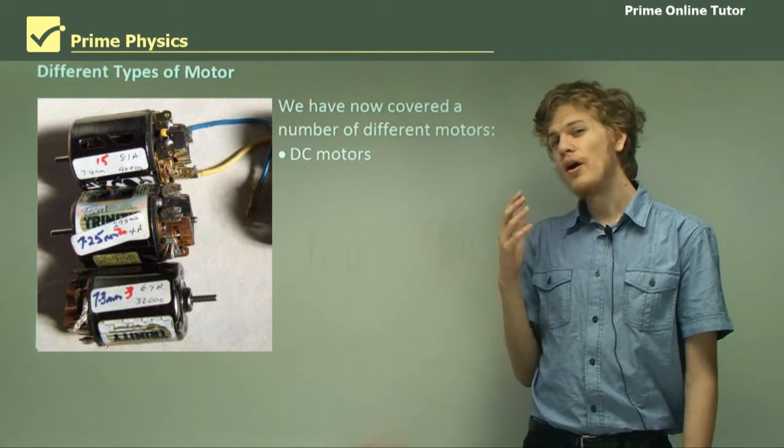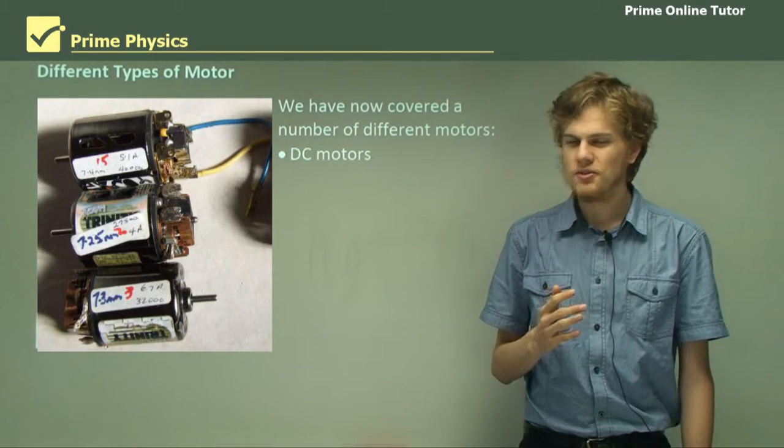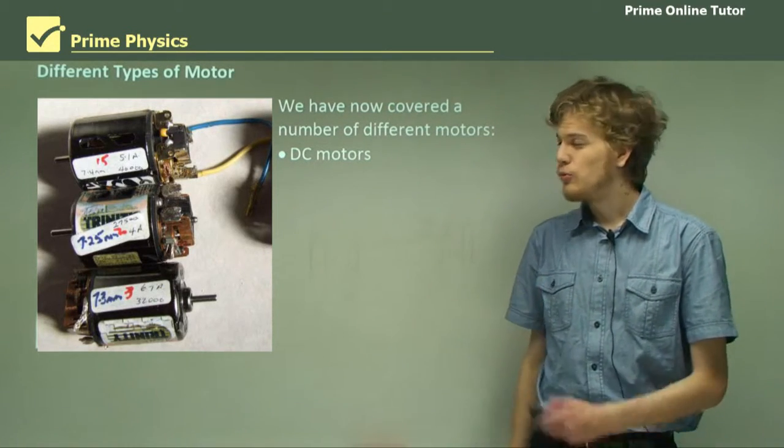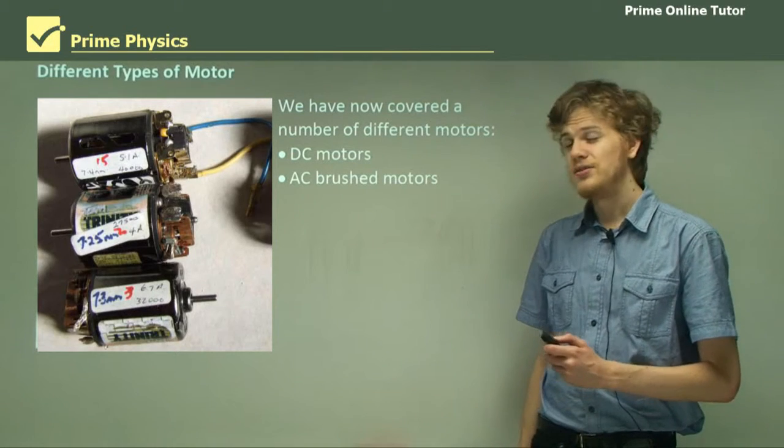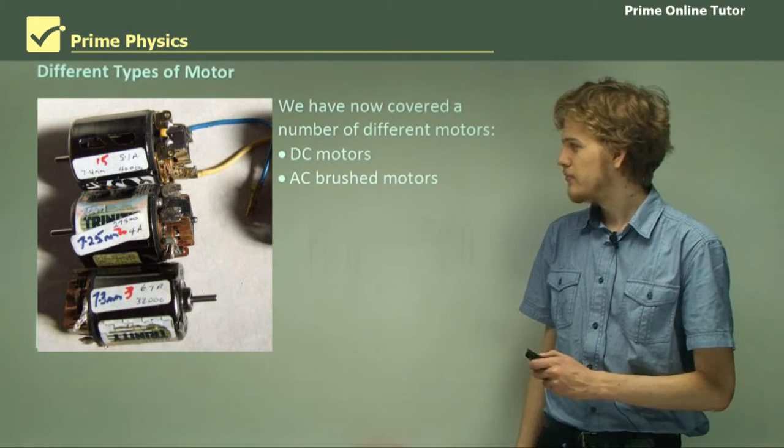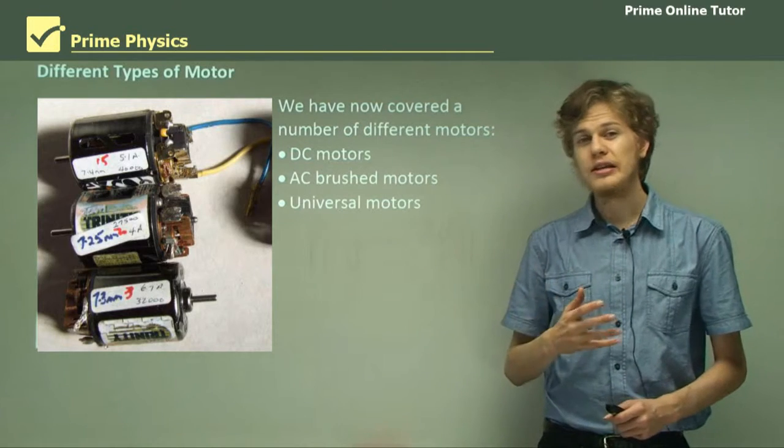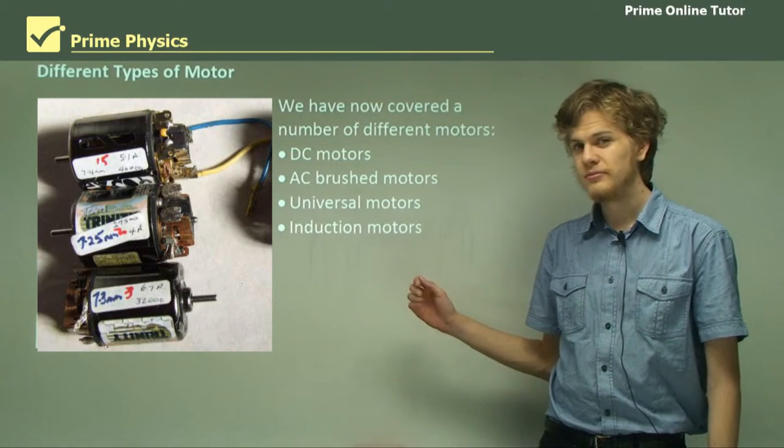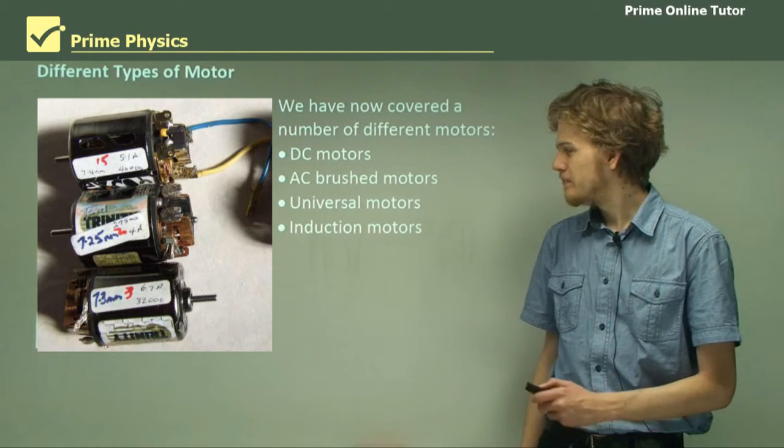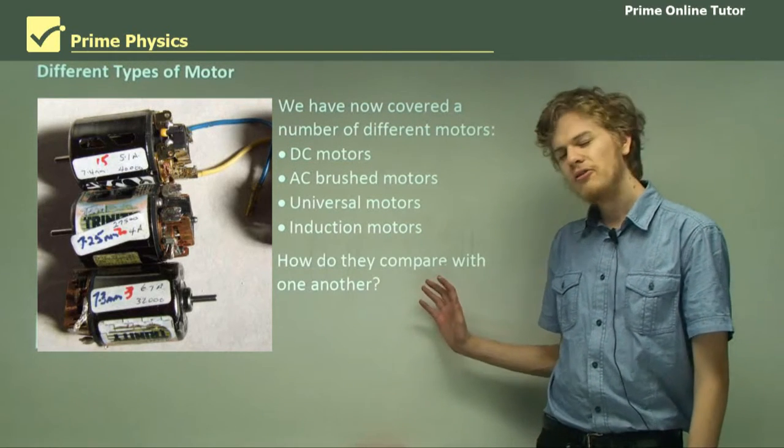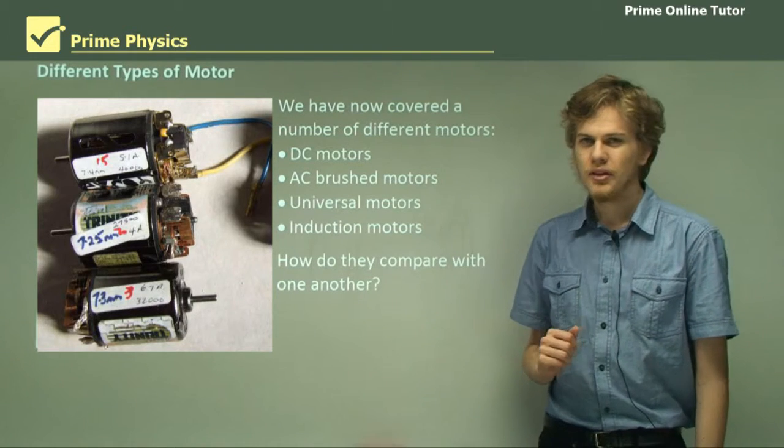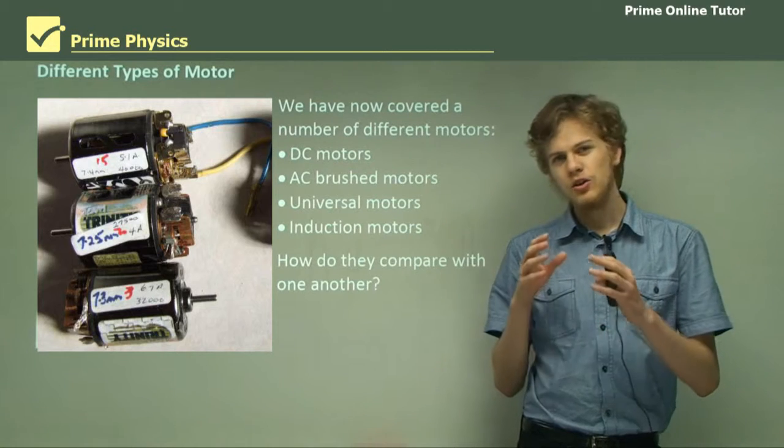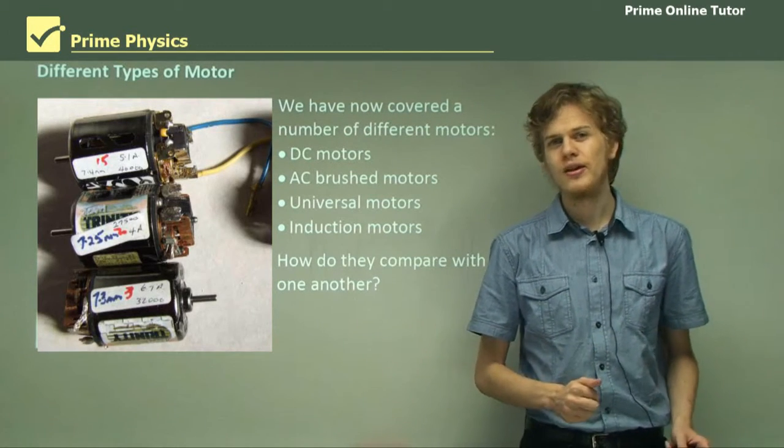So we've now covered quite a few different sorts of motors. Let's see if you can remember them all. We started off with DC motors and more recently we've covered AC brushed motors, universal motors which can run on AC or DC power, and induction motors or squirrel cage motors. So how do they compare with one another? We know about the construction and the uses of all of them but we haven't really compared them side to side yet. So let's do that now.